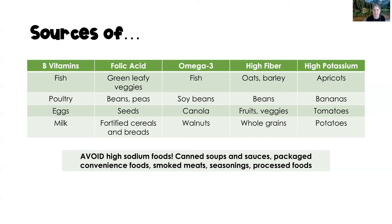High potassium foods include apricots, bananas, tomatoes, and potatoes — all great sources of potassium. Keep in mind that sometimes clients with cardiovascular risk need to lower their potassium, such as when taking a potassium-sparing diuretic, so they would want to eat foods lower in potassium. You really have to watch potassium levels carefully — your client may need high or low potassium depending on their situation.